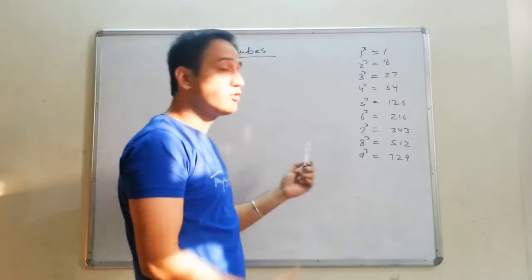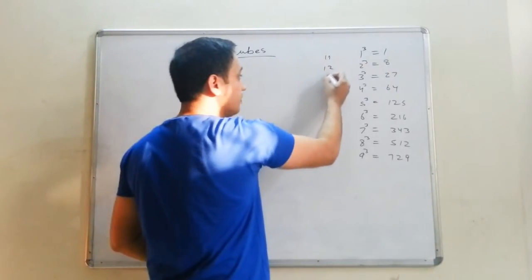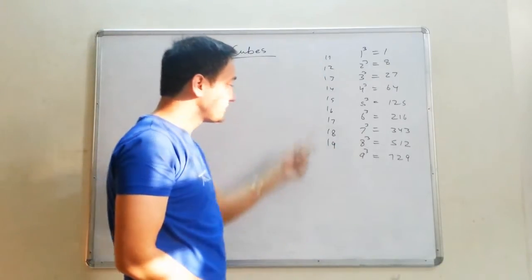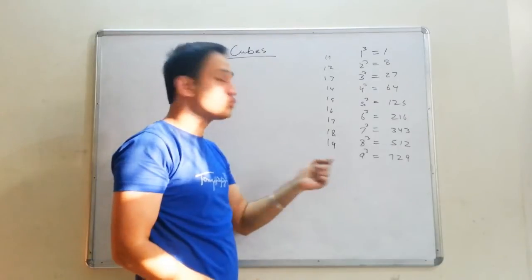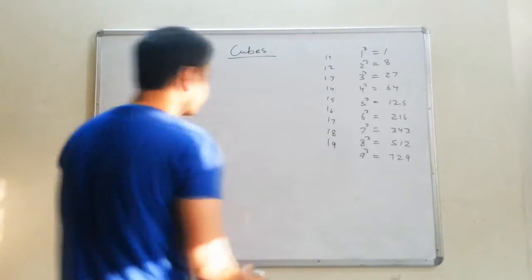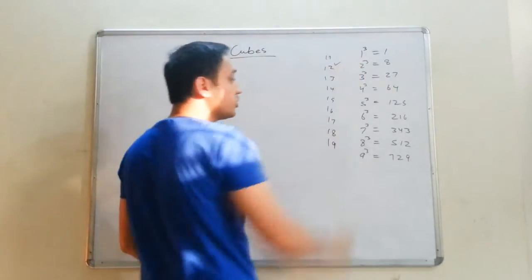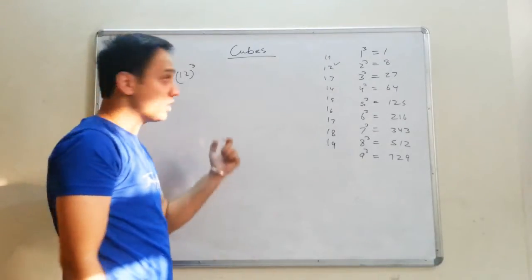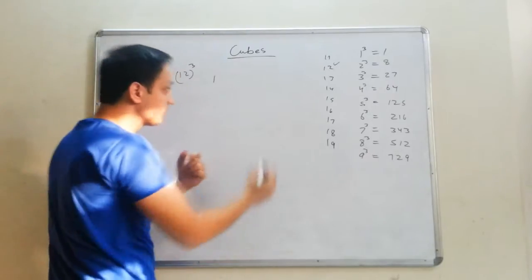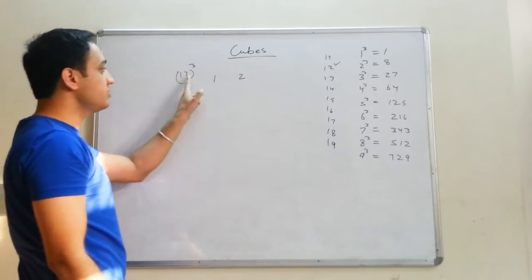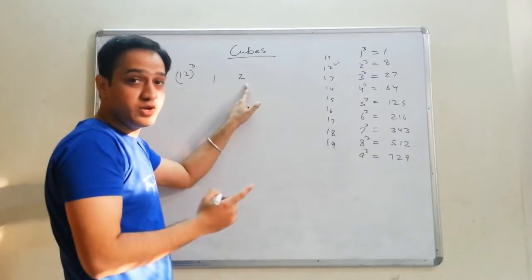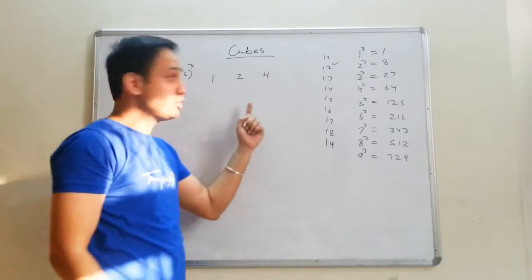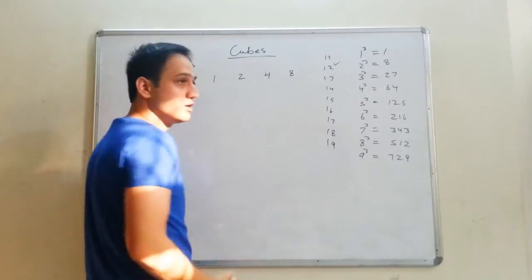If you have to find out cubes of 11, 12, 13, 14, 15, 16, 17, 18, 19 — for cubes till 19, there is one shortcut. Let's suppose I start with cube of 12. I'll write 1, then the next digit is 2. Now I'll do square of 2, which is 4. Now I'll do cube of 2, which is 8.